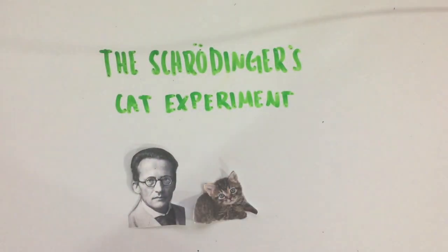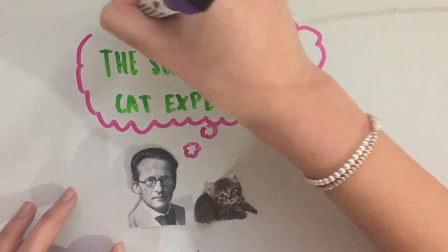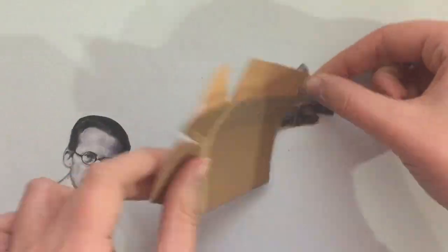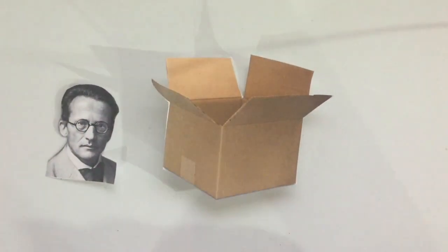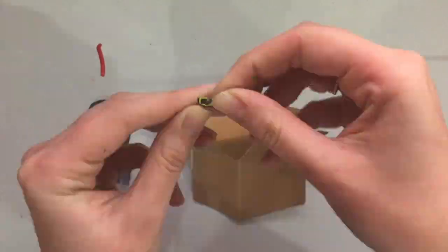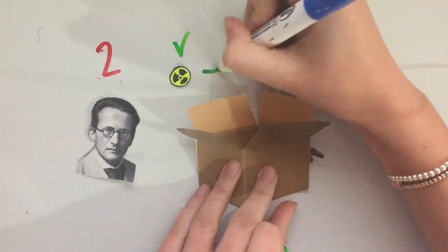This was a thought experiment, meaning that it never actually took place. In this experiment, a cat was to be put in a sealed box with radioactive material that had a 50% chance of decaying and killing the cat, and a 50% chance of doing nothing and allowing the cat to survive.